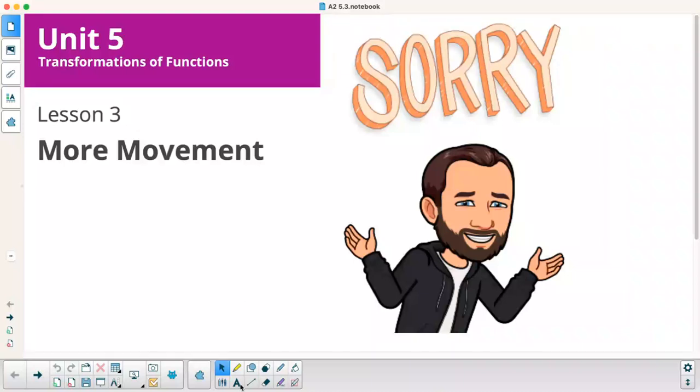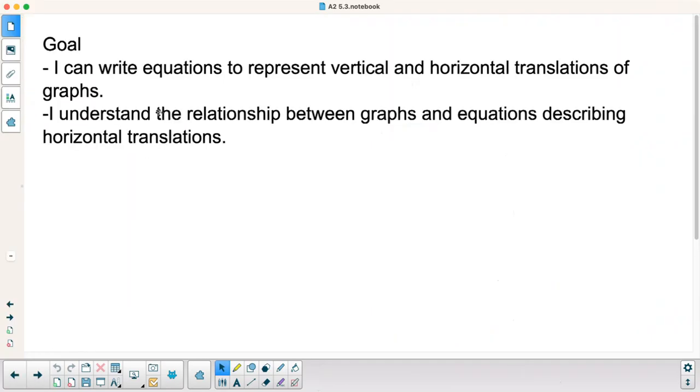Illustrative Math, Algebra 2, Unit 5, Lesson 3 is called More Movement. So our goal today is I can write equations to represent vertical and horizontal translations of graphs, and I understand the relationship between graphs and equations by describing horizontal translations.